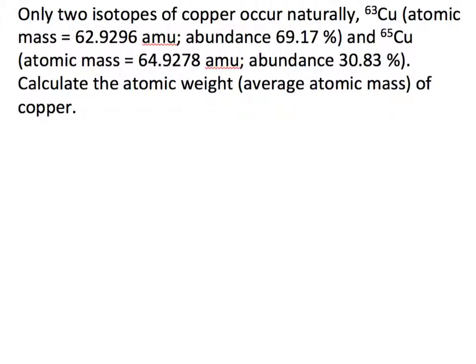Alright, practice problem 2.4. Only two isotopes of copper occur naturally. Copper-63, which has an atomic mass of 62.9296 atomic mass units and an abundance of about 69.17%, and copper-65, which has an atomic mass of 64.9278 atomic mass units and an abundance of 30.83%.